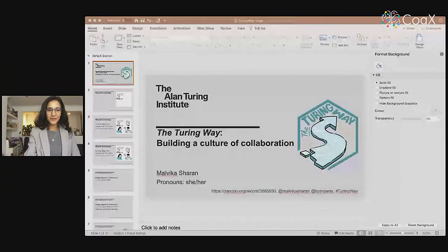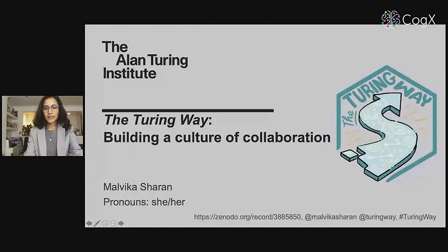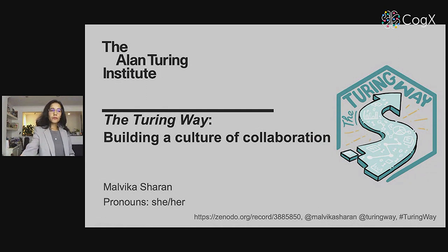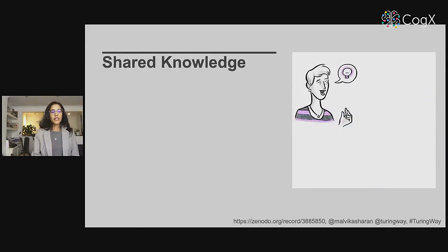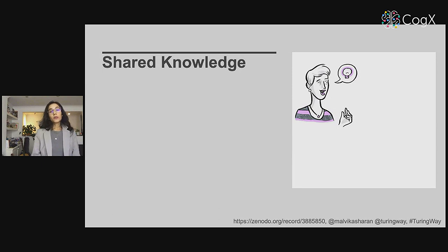I'll talk about building a culture of collaboration using examples from our work at the Turing Way. My one big idea to get the next 10 years right for our next generation of scientists and data researchers: shared knowledge. We all have skills and experiences, ideas and perspectives, which can become exponentially more useful and impactful when shared, combined, complemented, and built upon.